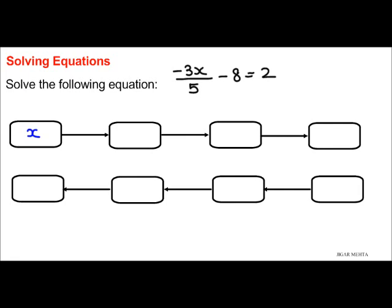Starting with x, I need to get negative 3x. Clearly, I need to multiply x with negative 3 to get negative 3x.